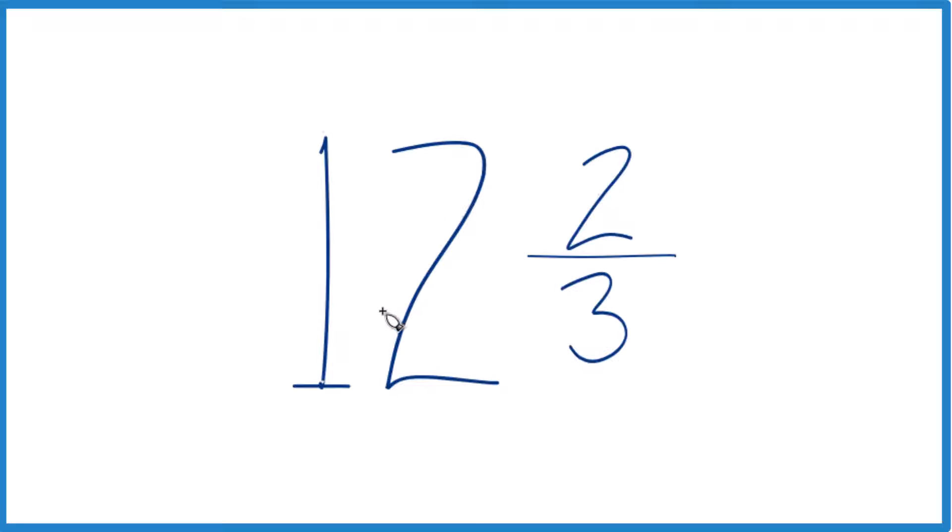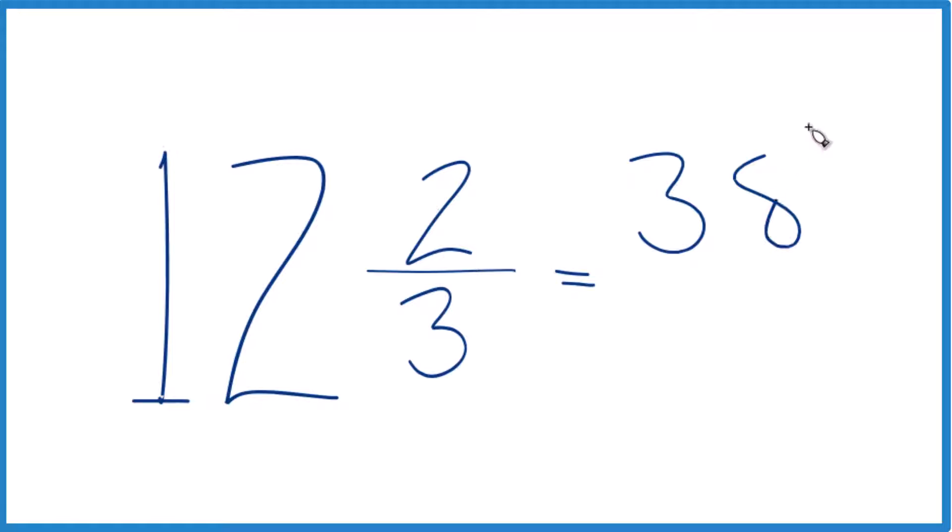You take the whole number, that's the 12, multiply it by 3. 12 times 3 is 36. You add that to the 2, 36 plus 2 is 38, and you just bring the 3 across, and that's it.